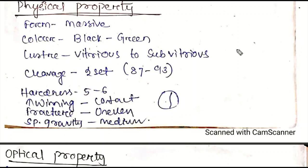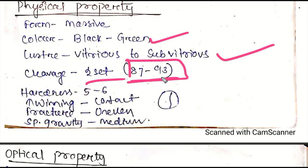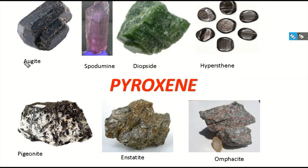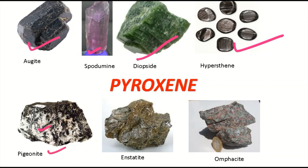Physical properties of pyroxenes: the form is massive; colors include white, green; luster is vitreous to sub-vitreous; cleavage has 2 sets at angles of 87° and 93°, which is very important for mineral identification. Hardness is 5 to 6. Twinning is contact twinning. Fracture is uneven. Specific gravity is medium. Some minerals are black — spodumene is pink (lithium pyroxene), diopside is green, hypersthene is black, pigeonite is white/calcium-bearing, and enstatite.